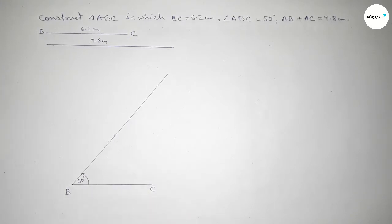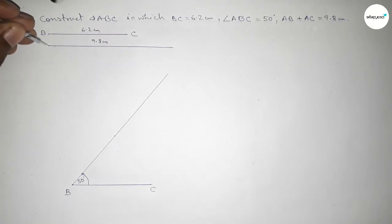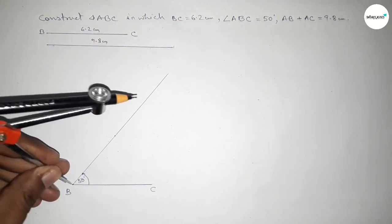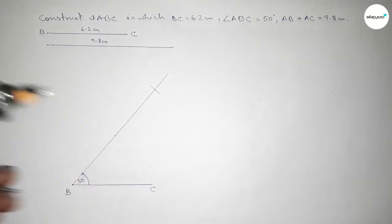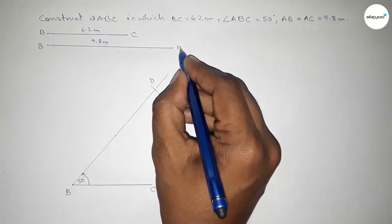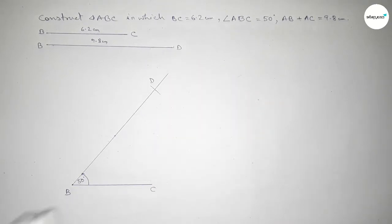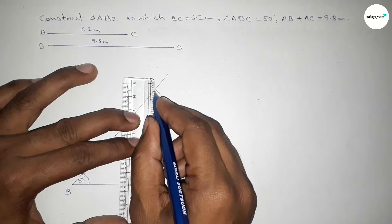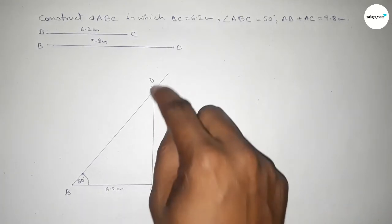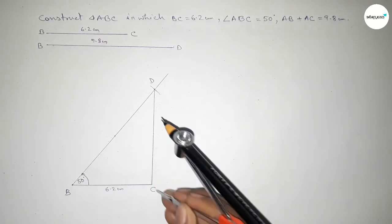Now joining this line to get the 50 degree angle at point B. Next, we take the length 9.8 centimeters using a compass, putting the compass here and cutting here to mark point D. So this is the BD line. Now joining lines B, C and D.